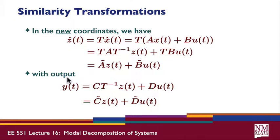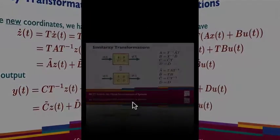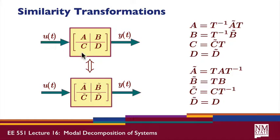Similarly, the output Y is equal to CX plus DU. Substituting X equals T inverse Z, the new C matrix — C tilde — is CT inverse, and the new D matrix is the same as the old D matrix. We have input U, output Y, and ABCD matrices which we can write in terms of the tilde matrices, or equivalently in terms of the original matrices.